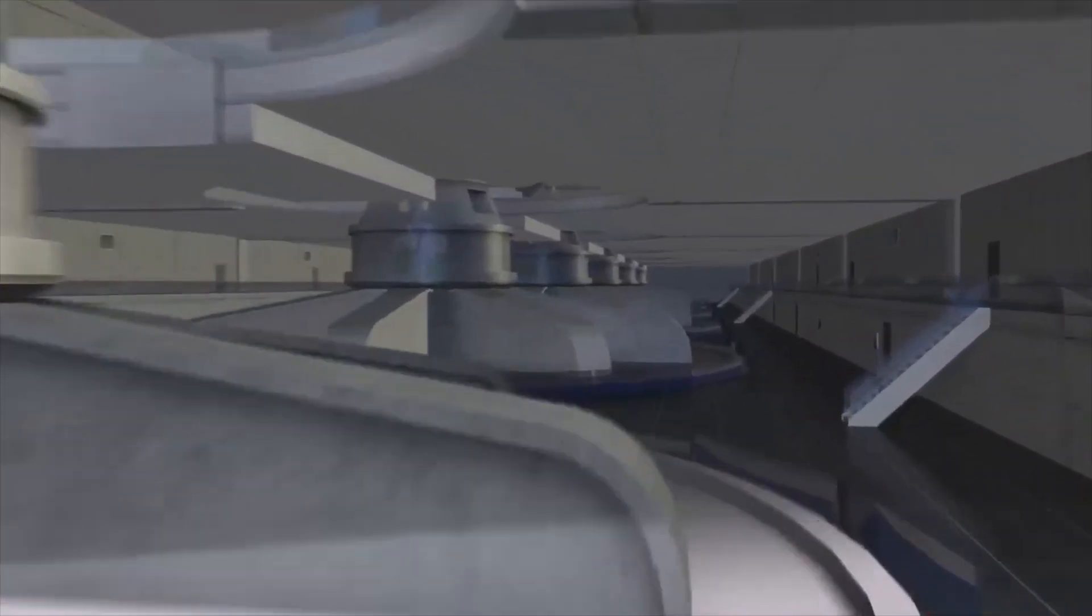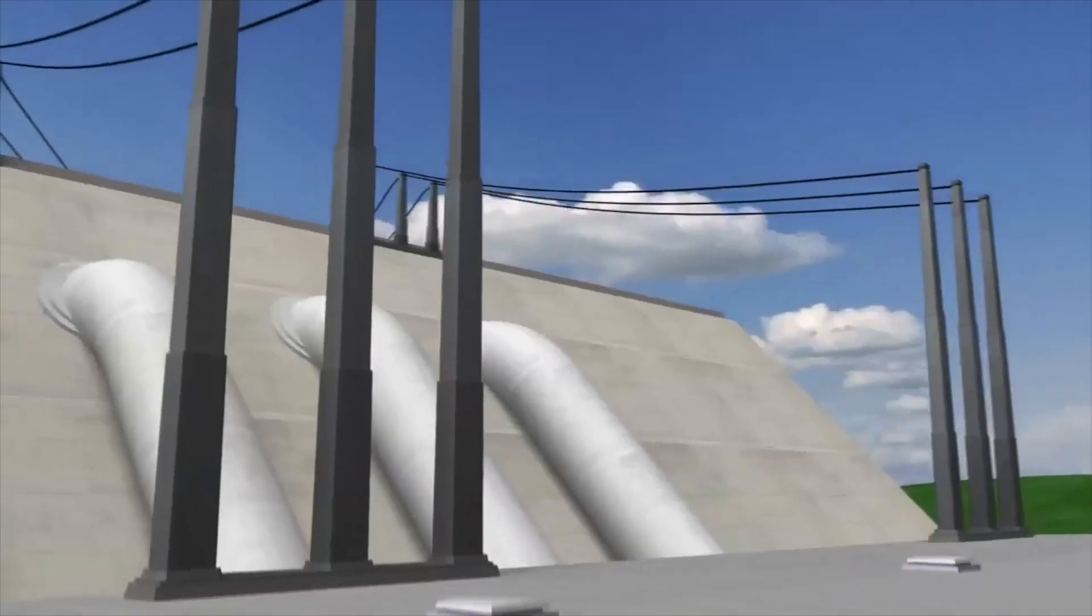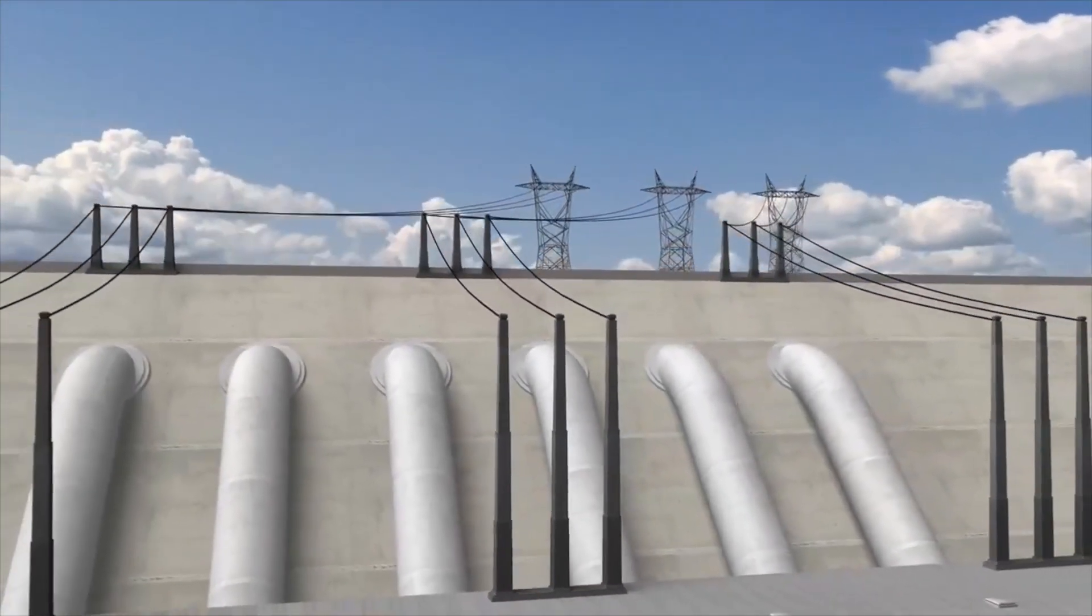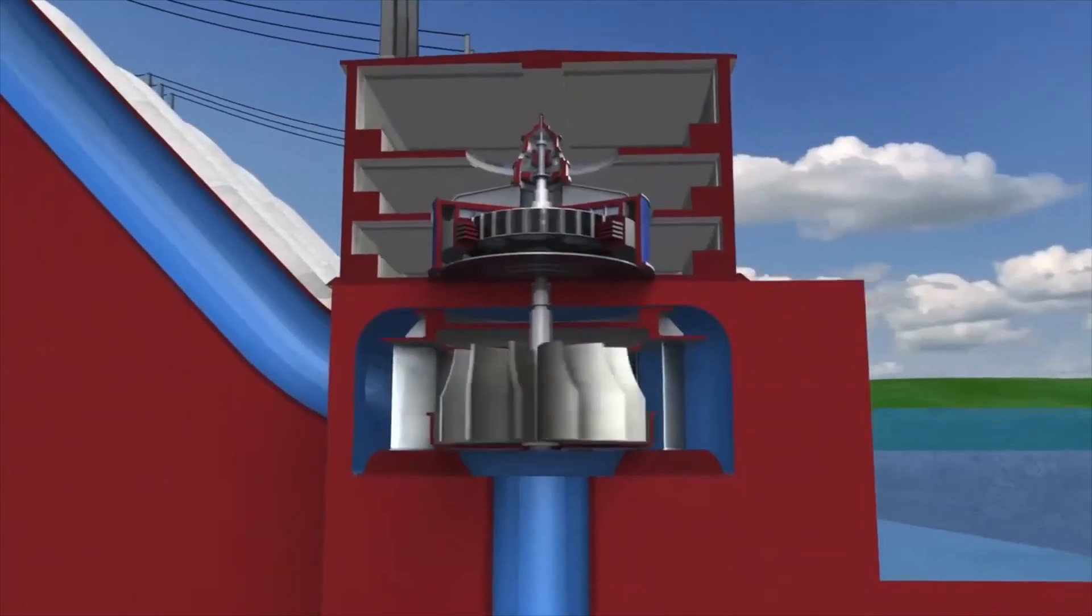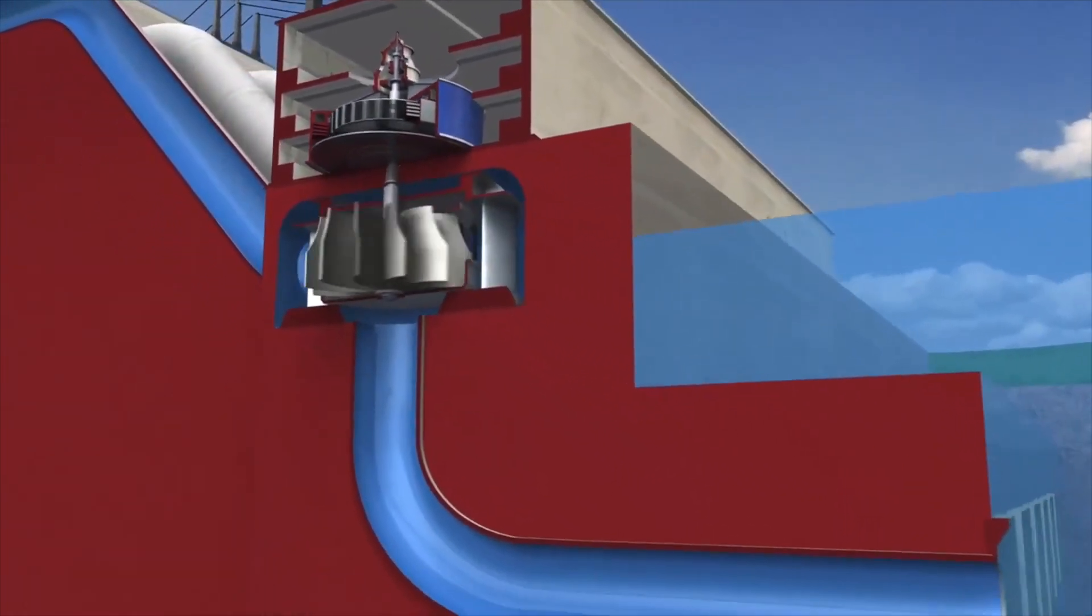The electricity travels along high voltage wires to transformers, then onto transmission towers where it connects into the provincial power grid. After passing through the turbine, the water continues through the tailrace where it rejoins the river below.